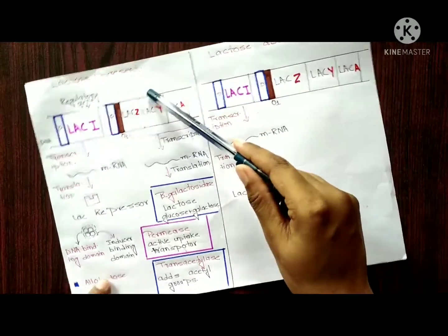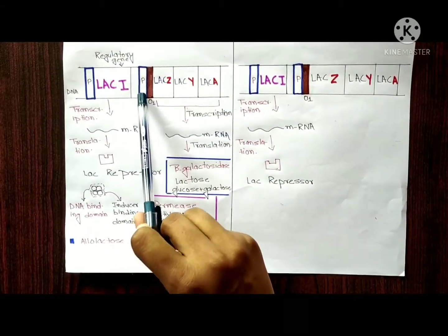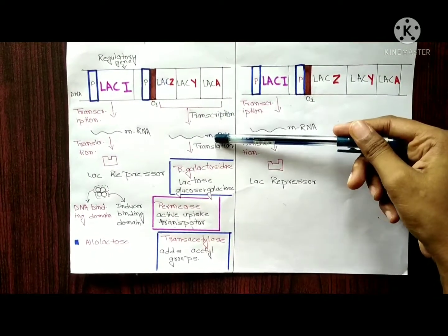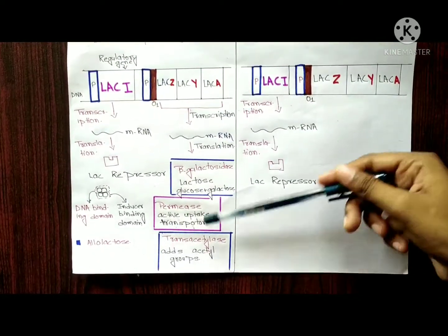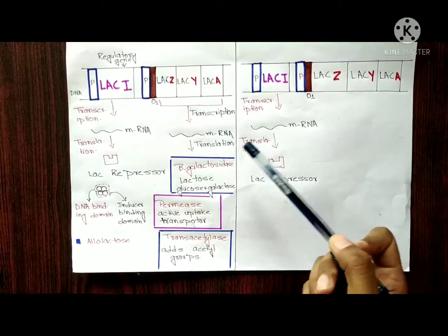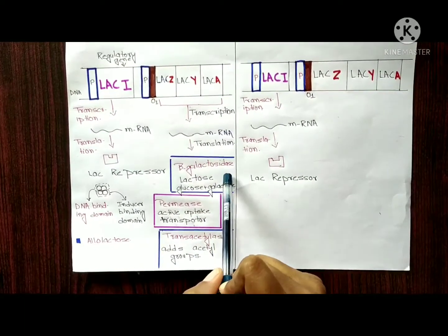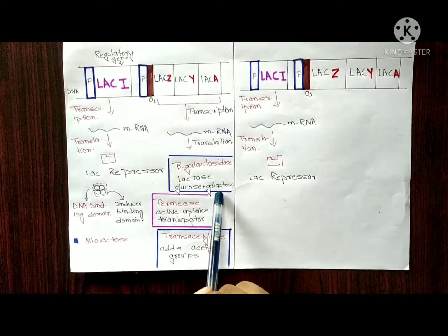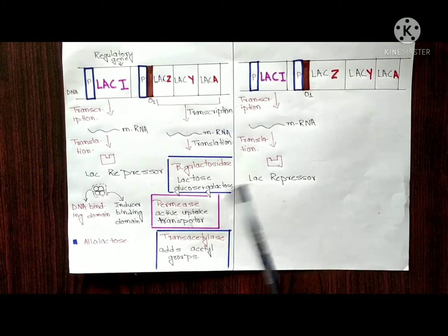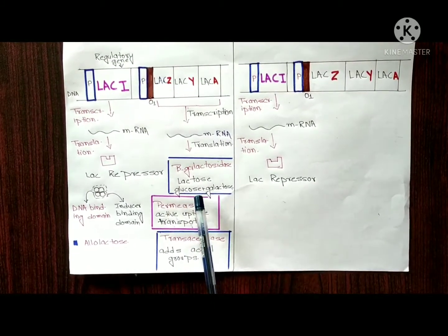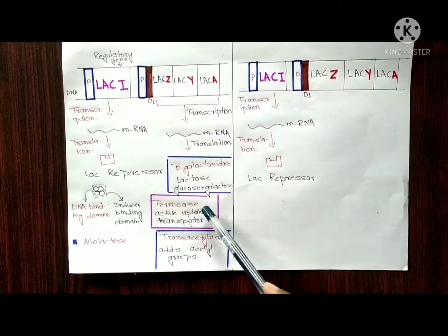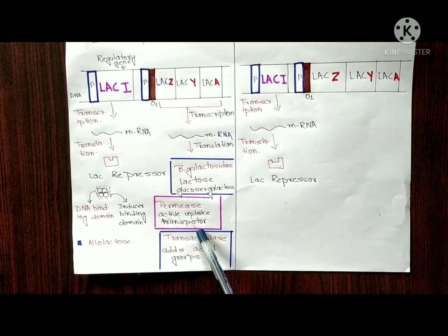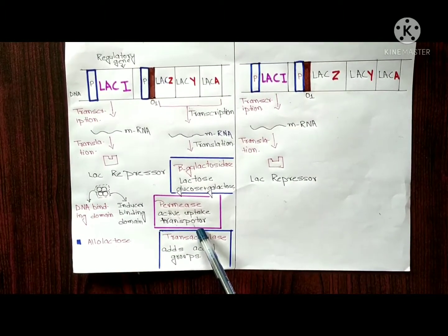As a result, RNA polymerase binds to the promoter and starts transcription. mRNA is produced, and after translation, proteins are made. These proteins — beta-galactosidase, permease, and transacetylase — break down lactose into glucose and galactose, which E. coli uses as a source of energy. Permease acts as an active uptake transporter.